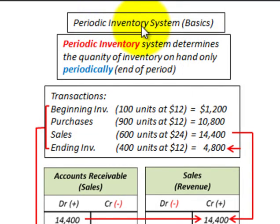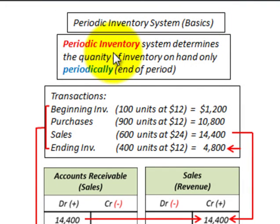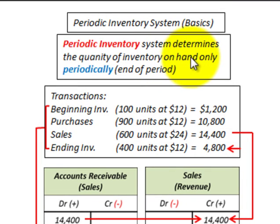Here we're going to be looking at a periodic inventory system — accounting for periodic inventory — just the basics. With a periodic inventory system, you determine the quantity of inventory on hand only periodically, or at the end of the period.